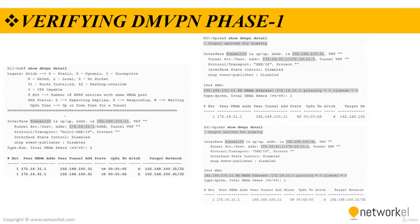We can also check 'show dmvpn detail'. This command provides the tunnel interface, tunnel role, tunnel state, and the tunnel peers with uptime, giving more detailed information. The interface is tunnel 100 and it is in an up state. Here is the address for this one along with some more detailed information.